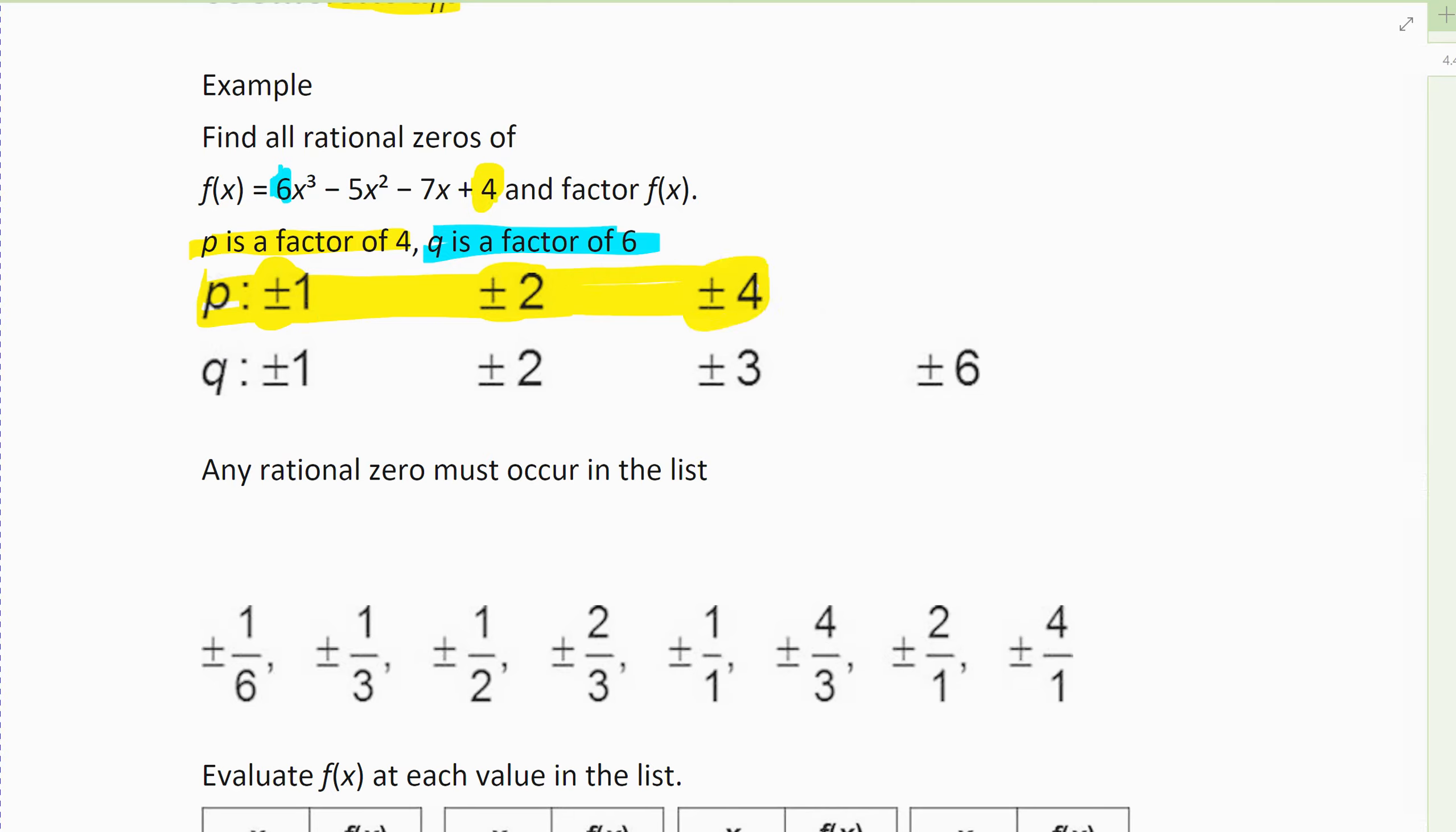Then I do the same thing for q. q is 6, because it's the leading coefficient's factor. And so all of the numbers that divide into 6, all of the factors of 6, the integer factors: 1, 2, 3, and 6. 1 divides into it, 2 divides into it, 3 divides into it, and 6 divides into it.